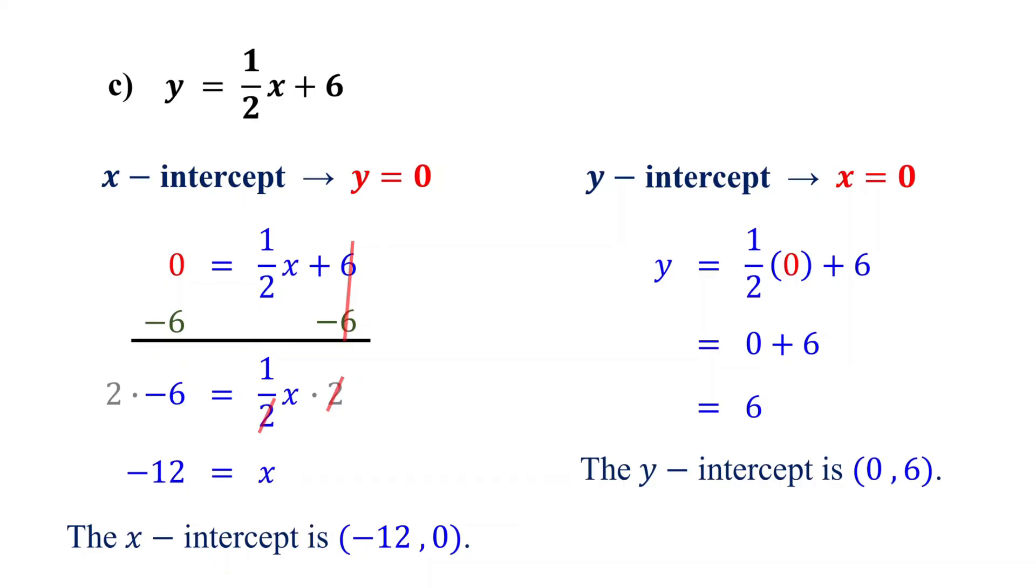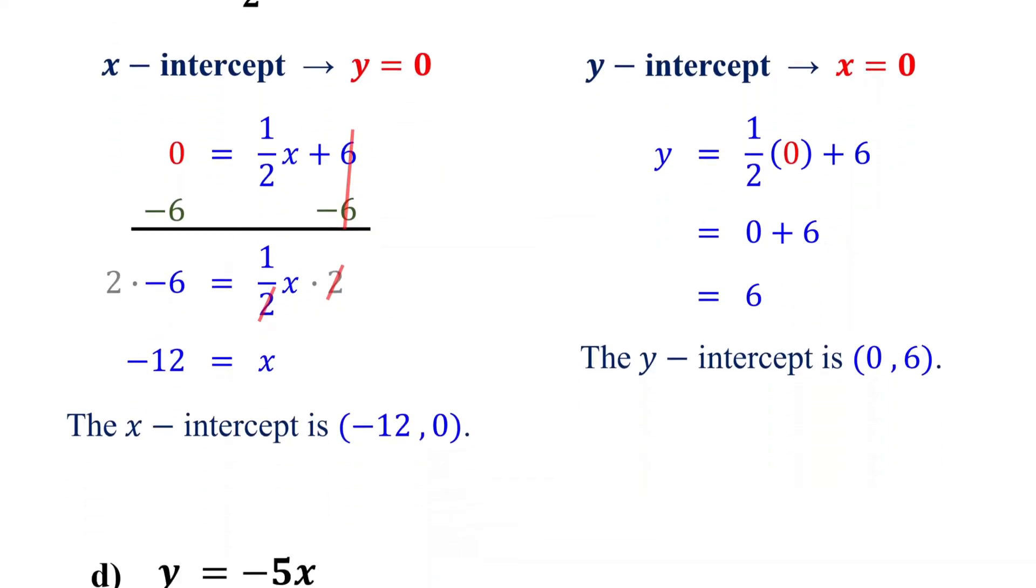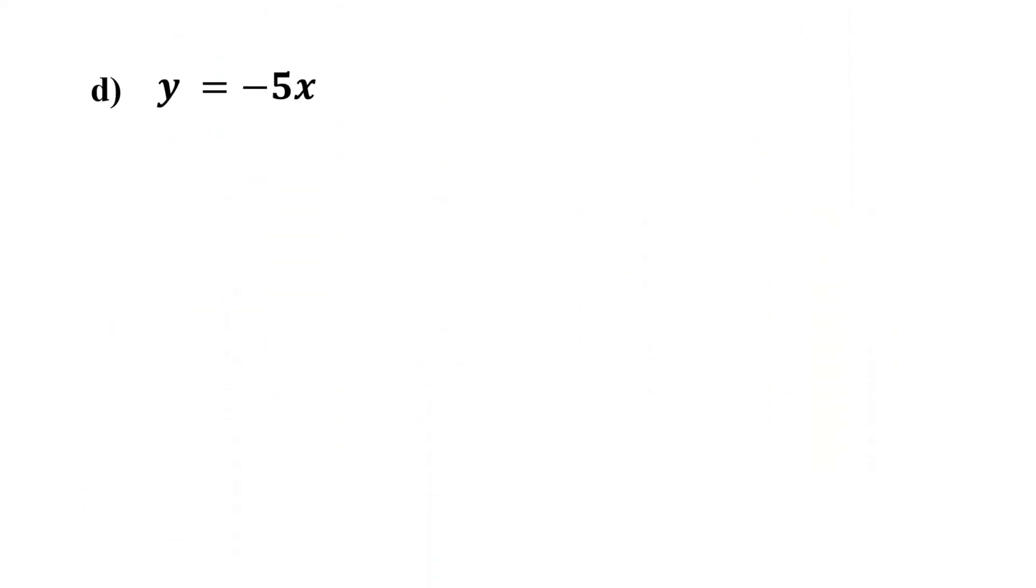By the way, did you know that sometimes the x and y-intercepts can be the same point? Let's see what that looks like with our final example. If you set y to 0 and solve for x, you find that the x-intercept is the point (0, 0).